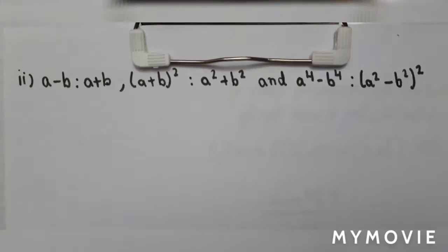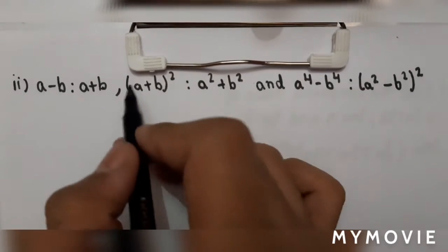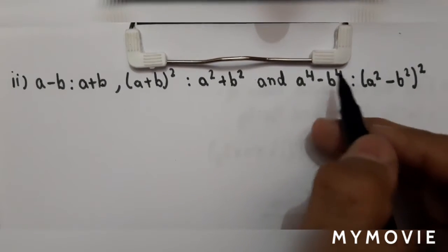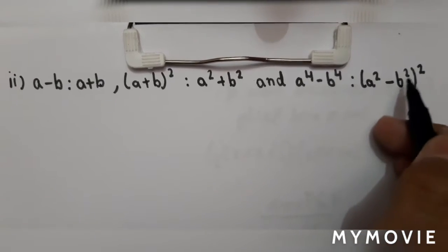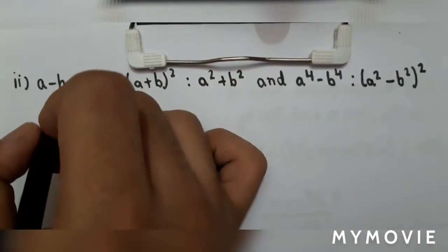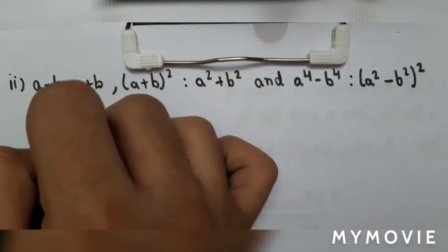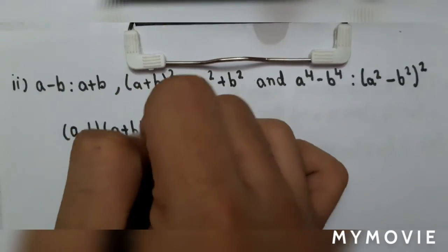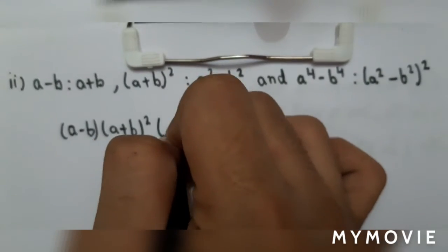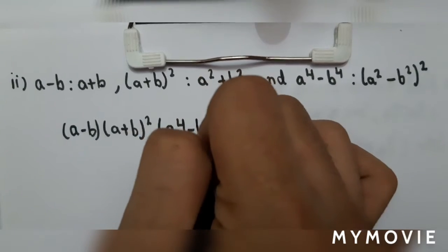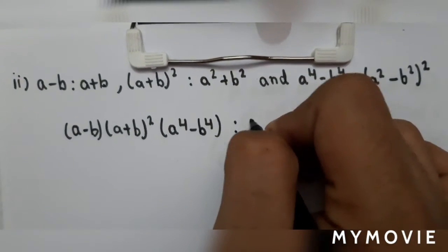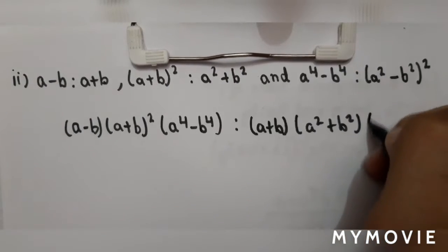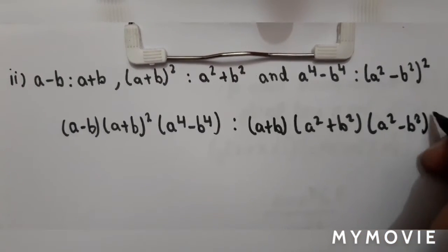Our second question is: find the compound ratio of (A−B):(A+B), (A+B)² : (A²+B²), and (A⁴−B⁴) : (A²−B²)². We should multiply the numerators: (A−B) × (A+B)² × (A⁴−B⁴), and the denominators: (A+B) × (A²+B²) × (A²−B²)².